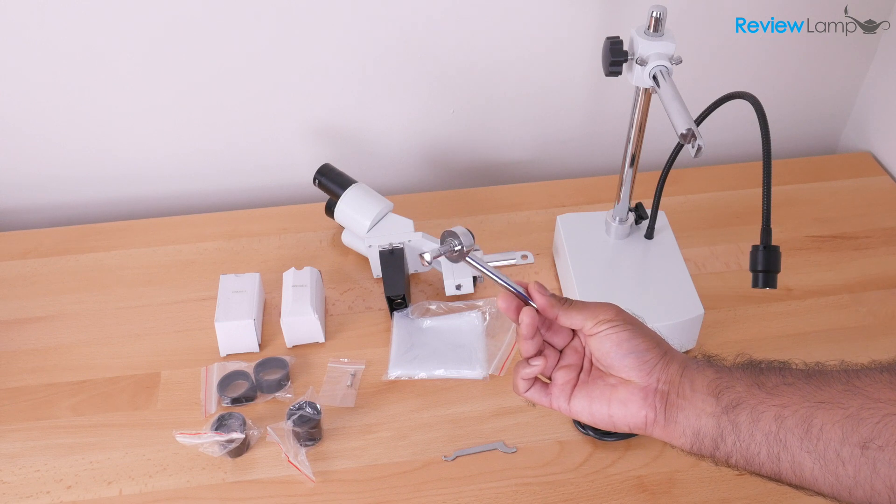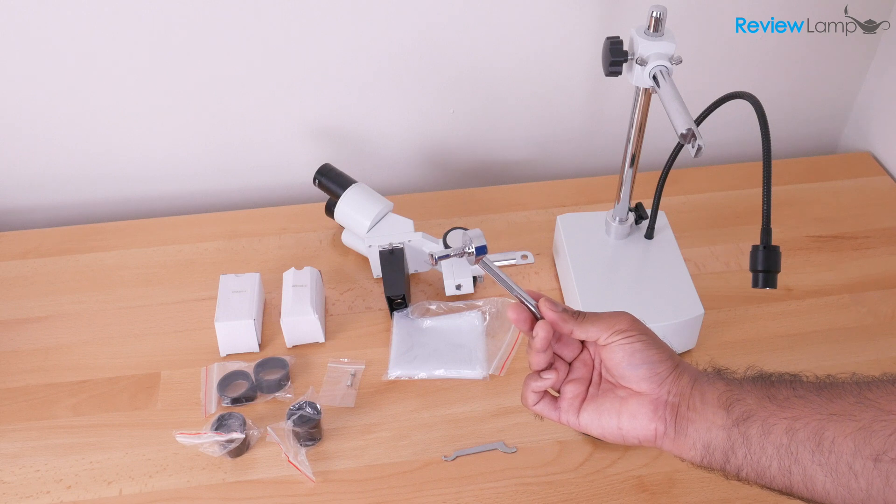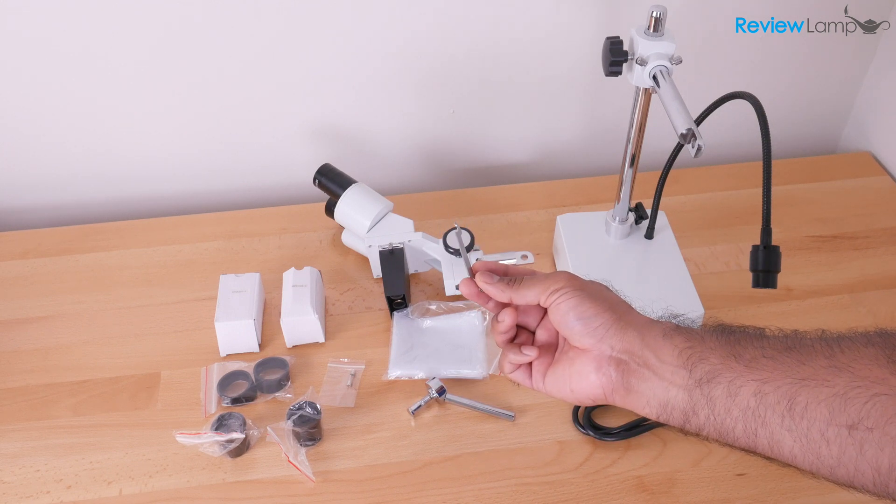You have a locking bolt and handle. This is what we're going to use to connect the microscope head to the base. There's a little wrench. I'm not exactly sure what we're going to use this for, but they've provided it in any case.